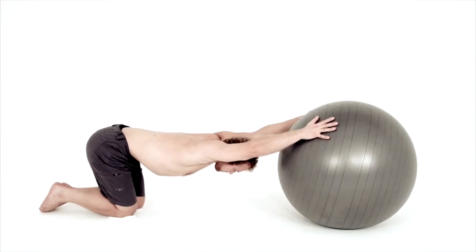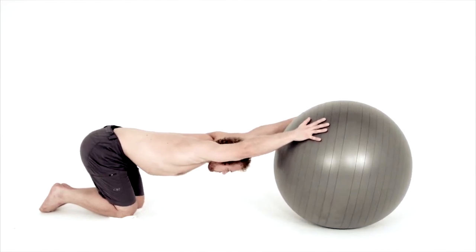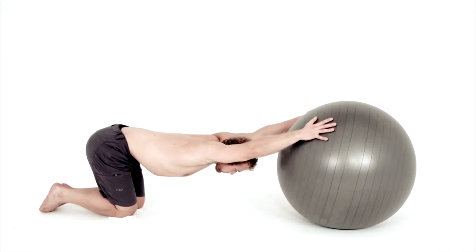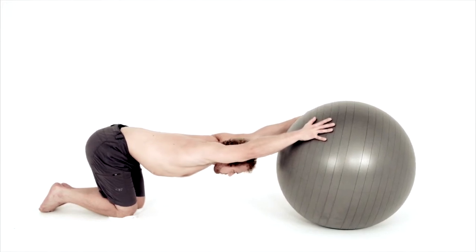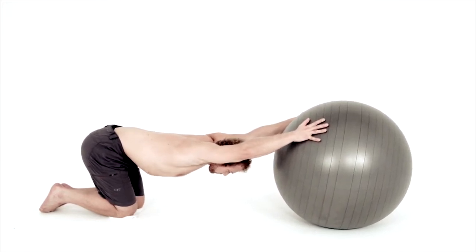In this position, lengthen out your fingertips and top of your head in opposite direction of your tailbone. Feel your spine elongating and your lower abdominals being drawn in towards your spine.